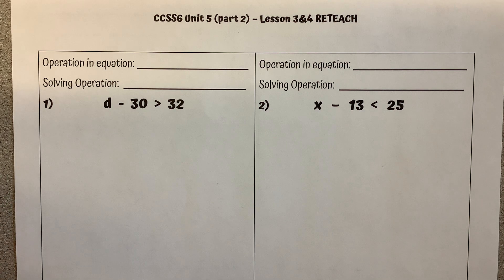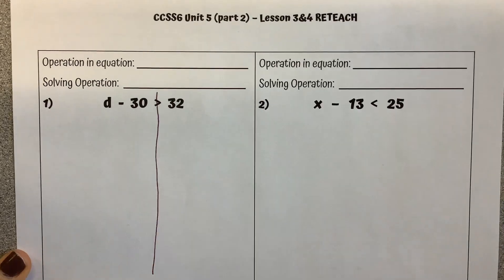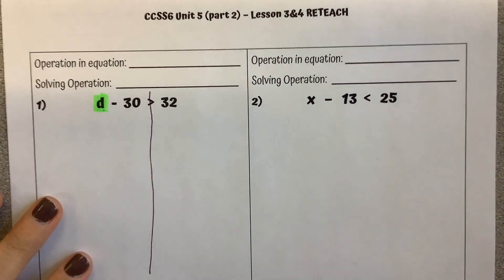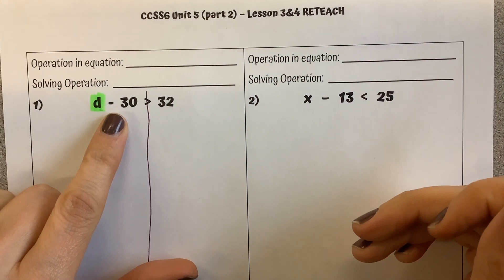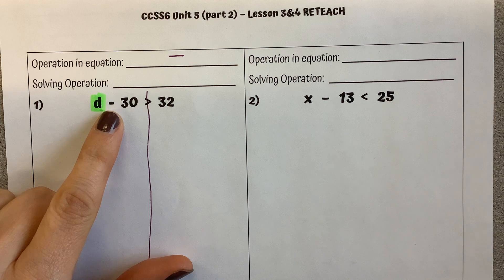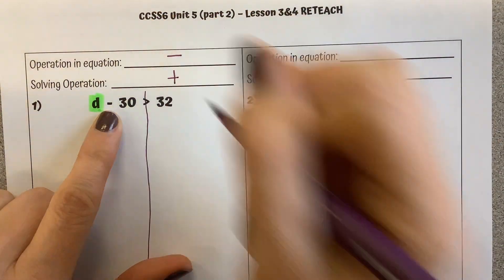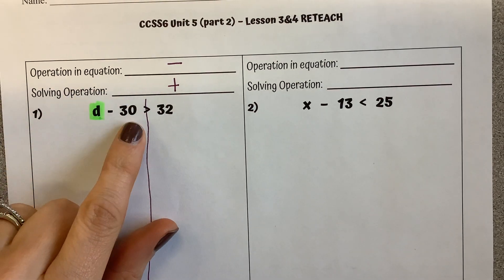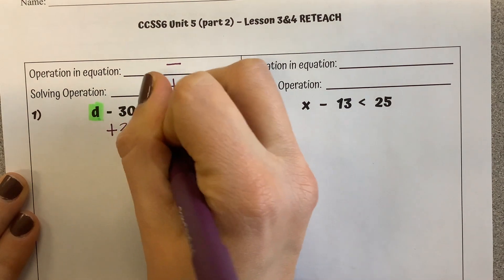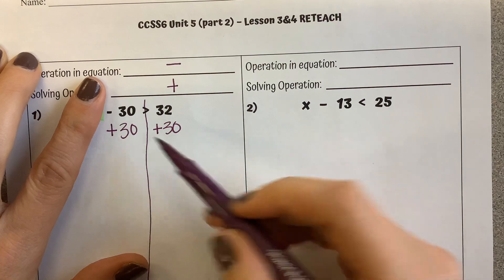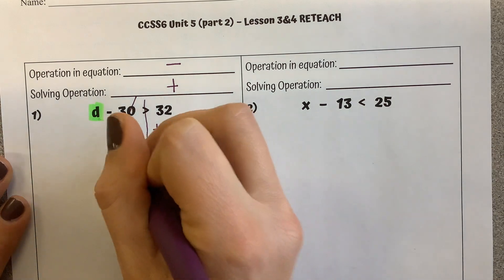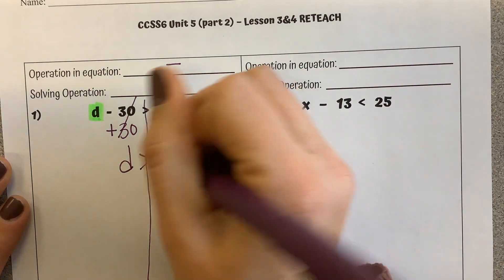Number one. Just like we did with the equations, I'm going to draw a line down my inequality symbol. I'm going to highlight my variable so I can easily see the side that it's on. On the side with the variable, the operation I see is subtraction. We use the opposite or inverse operation, so the opposite of subtraction is to add. We were doing minus 30, so we are going to add 30 to both sides. Negative 30 and positive 30 cancel each other out, we're left with just D. Bring down our inequality symbol. 32 plus 30 is 62.